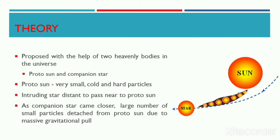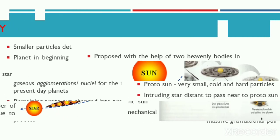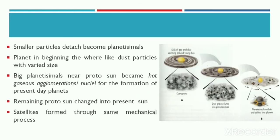A companion star was destined to pass very near to this protosun. As the companion star came closer and closer, a large number of small particles were detached from the protosun due to the massive gravitational pull exerted by this companion star. These smaller particles detached from the protosun were later on termed as planetesimals.